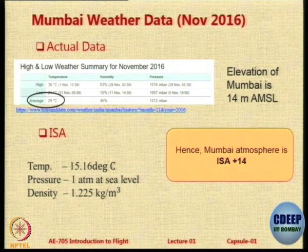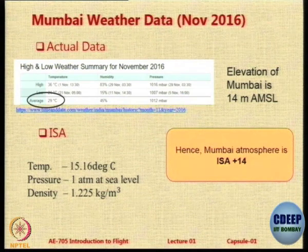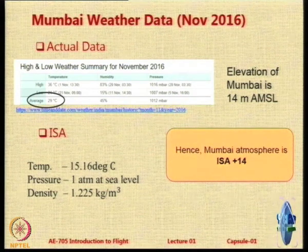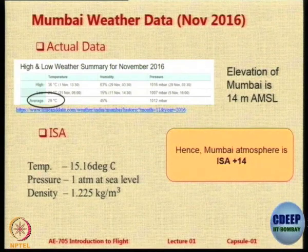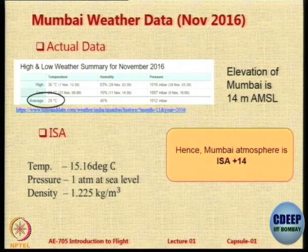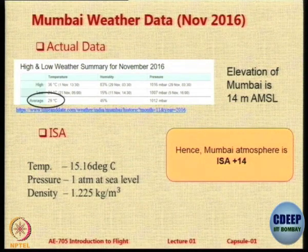When we say ISA plus 15, one very interesting assumption is made. We assume that the temperature profile at Mumbai from sea level up to say 55 km is a line parallel to the ISA temperature line, shifted by 14 degrees. So the temperature line only shifts — it is a parallel offset.